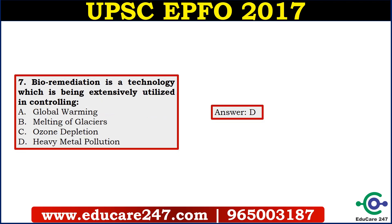Question number 7 is: bioremediation is a technology which is being extensively utilized in controlling what? Basically, bioremediation is used for heavy metal pollution. This was a very good question based on current affairs, as bioremediation technology had been in the news for metal removal from groundwater. You can see that they are asking questions from the current affairs of science and technology as well, so you need to go through current affairs of science and tech.